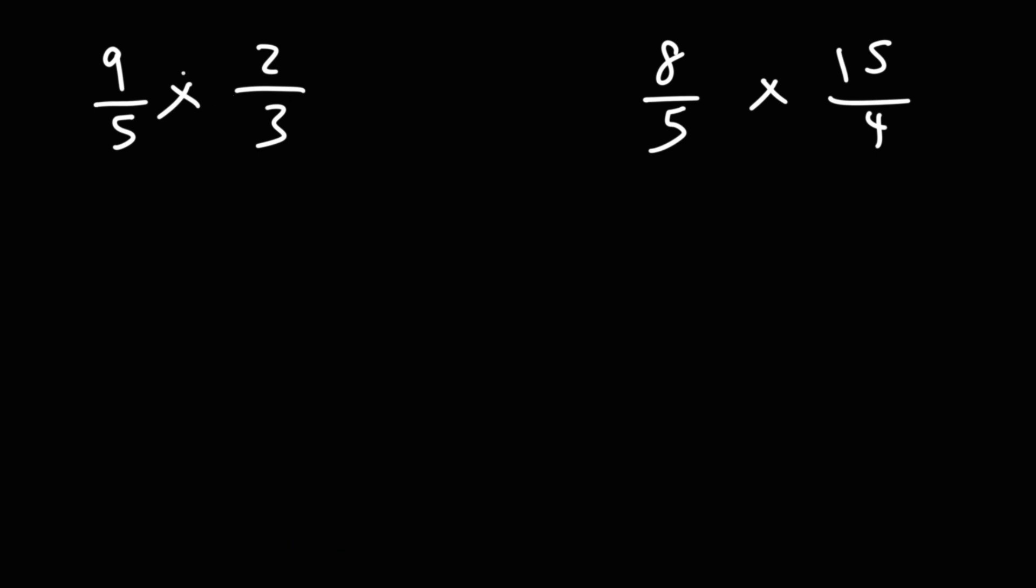So we can multiply across, but notice that 9 is divisible by 3. What I'm going to do is write 9 as 3 times 3, and 3 as 3 times 1.